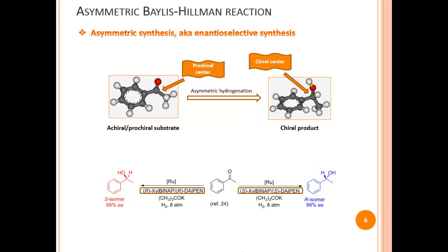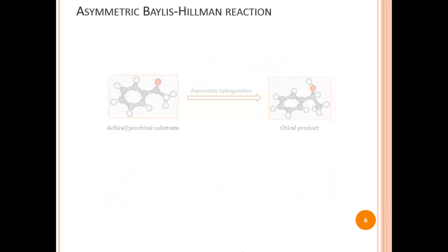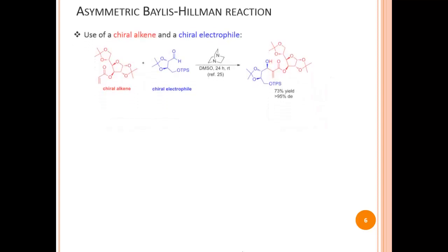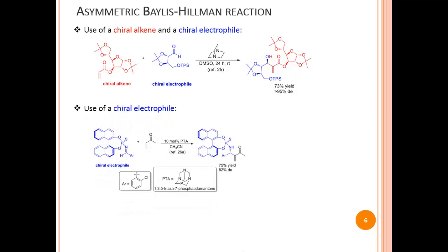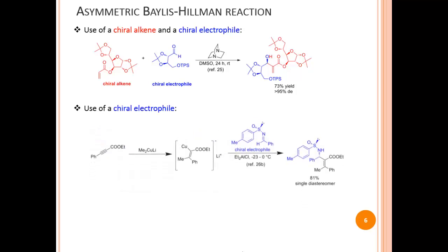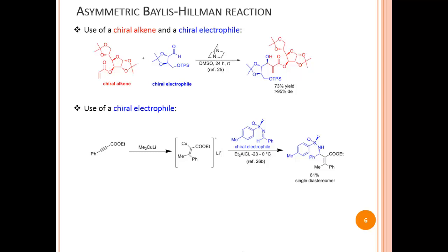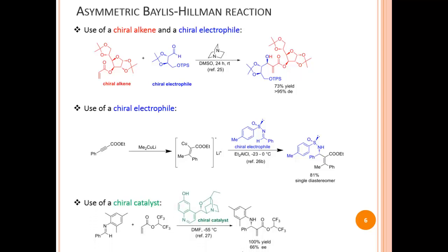Now let's examine a few asymmetric Bayliss-Hillman reactions reported in the literature. In the first example, a chiral alkene and a chiral electrophile in the presence of an organocatalyst yielded a product with high diastereoselectivity. The second example involves a chiral electrophile also yielding high diastereoselectivity. In another reaction, an alkene activated by a copper reagent reacted with a chiral electrophile to give a single diastereomer. A third example involves a chiral catalyst yielding a product with moderate enantioselectivity.